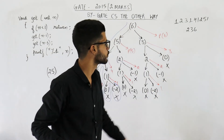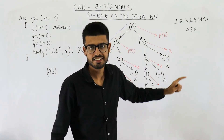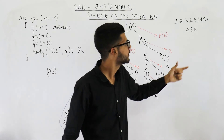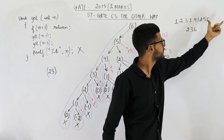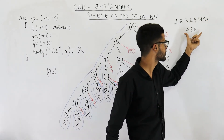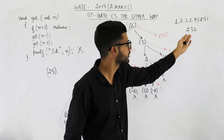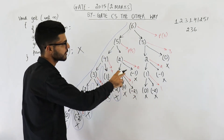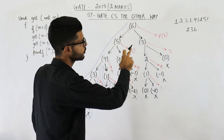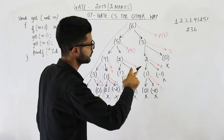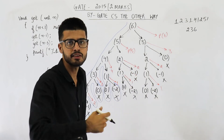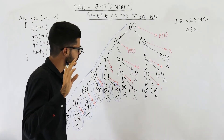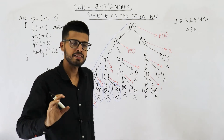So this is the output. One more point — the sequence 2, 3, 6 is not on a new line in the actual output; it continues on the same line. But I have written it on a new line for visibility. So the complete output is: 1, 2, 3, 1, 4, 1, 2, 5, 1, 2, 3, 6.